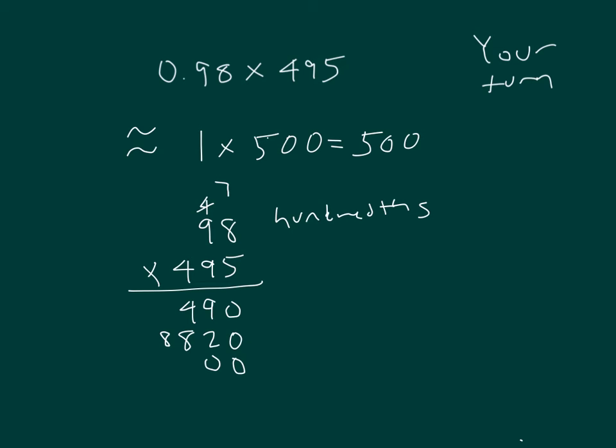4 times 8 is 32, 2, regroup of 3. 4 times 9 is 36, plus 3 is 39. And then we add those together. 13, 15, 5, regroup of 1, 18, regroup of 1, 4. 48,510 hundredths, which will equal 485.10. So check over your work.